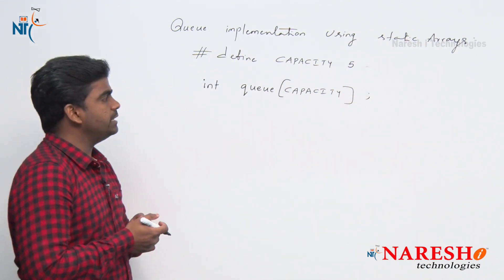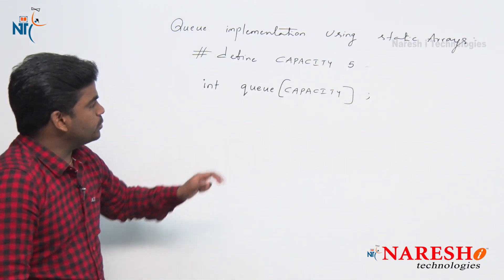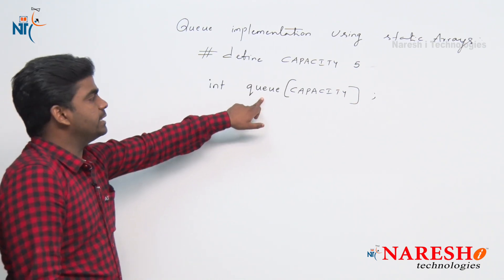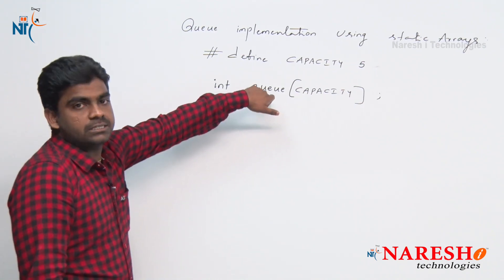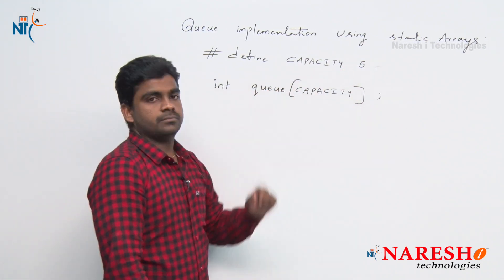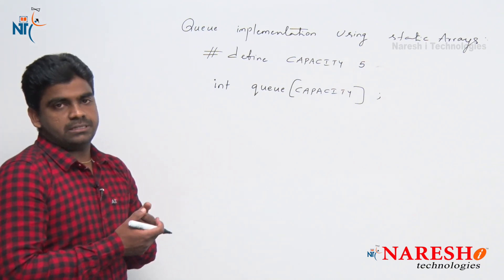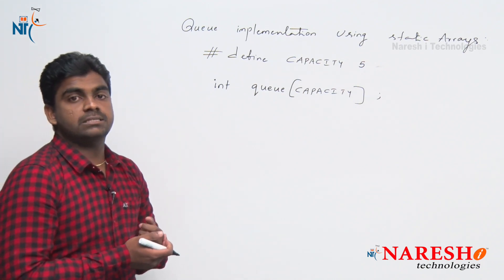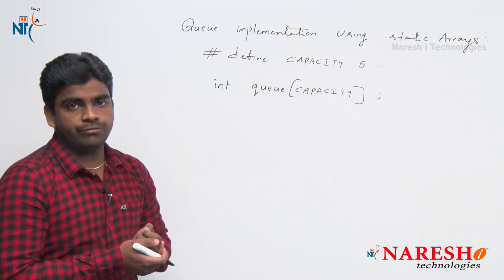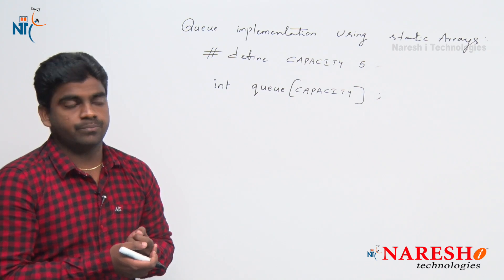Globally you have to declare this variable, then it will get memory allocation with size 5. So we can insert 5 elements maximum, because the size is fixed.